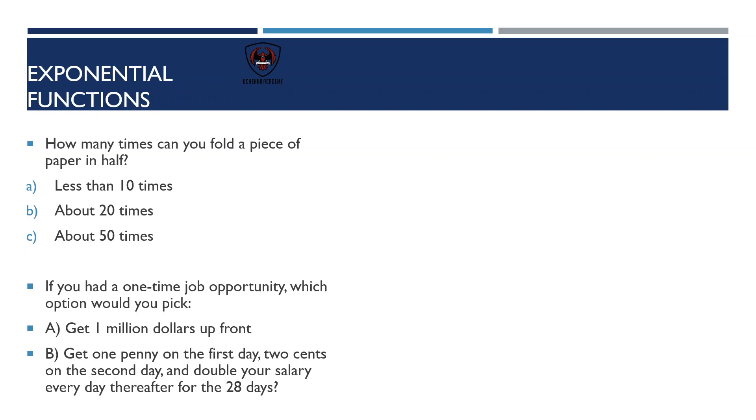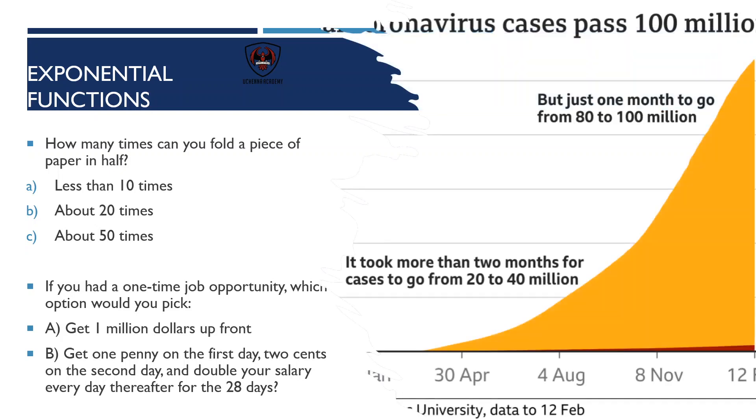Another super important example is growth of viruses, with coronavirus being the most recent example. It really shows the extent of exponential growth in that it took two months for cases to go from 20 to 40 million, but then just one month to go from 80 to 100 million. The exponential growth is exemplified by this slow upward trend that eventually really takes off, and once it takes off, it's hard to make it slow down.